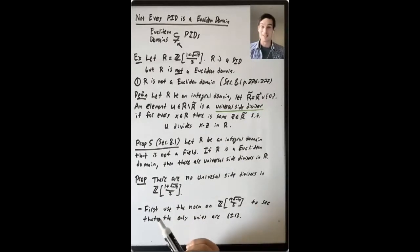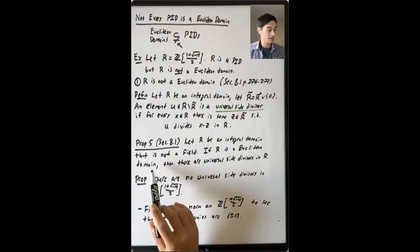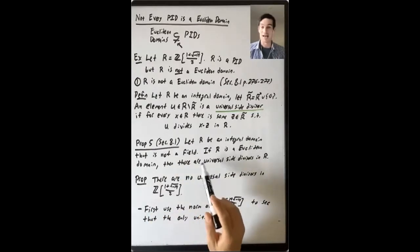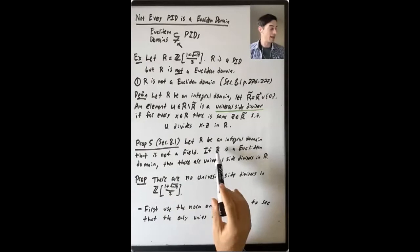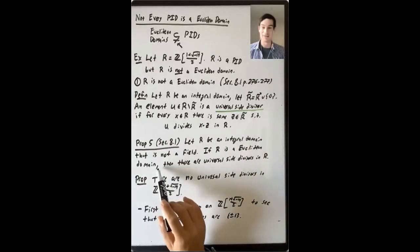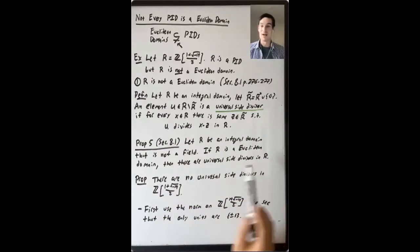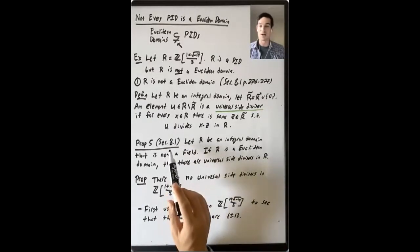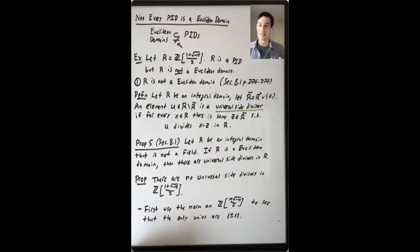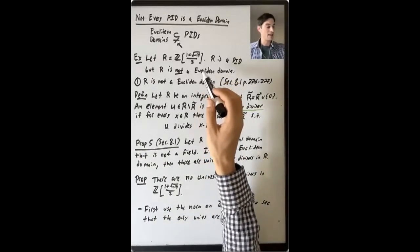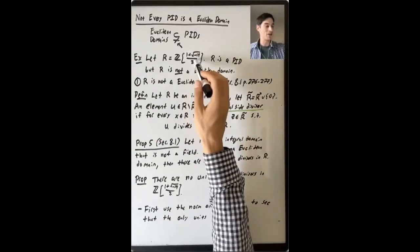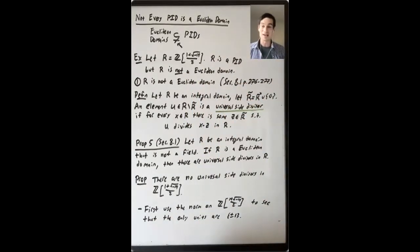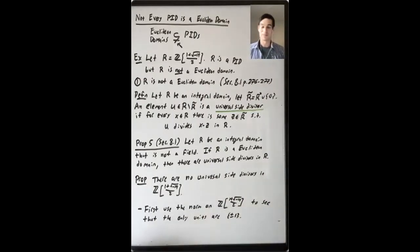This is a slightly tricky concept. I'd recommend thinking about what happens in an example like Z or F[x]. Proposition 5 in section 8.1 says that if R is an integral domain that is not a field, and if it's a Euclidean domain, then there are universal side divisors in R. So Z is a Euclidean domain that's not a field — it has to have universal side divisors. So we show that Z[(1+√(-19))/2] is not a Euclidean domain by showing that it has no universal side divisors.